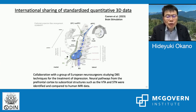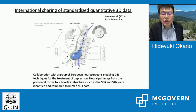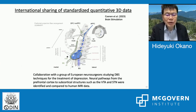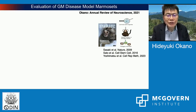As a practical application, we collaborated with a group studying deep brain stimulation for the treatment of depression. Neural pathways from the prefrontal cortex to subcortical structures such as the ventral tegmental area and subthalamic nucleus were identified and compared to human MRI data.